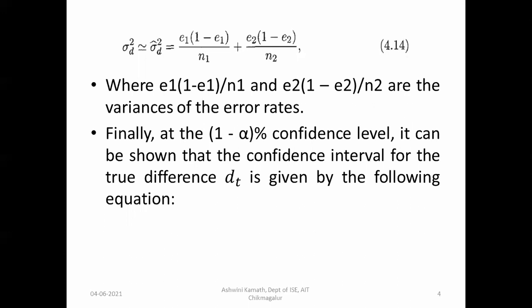At the (1 - alpha) percentage confidence level, the confidence interval for the true difference Dt is given by: Dt = D ± Z_{alpha/2} * sigma_D_cap. Here Z_{alpha/2} is the value corresponding to the confidence level.